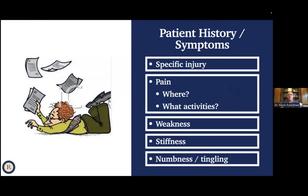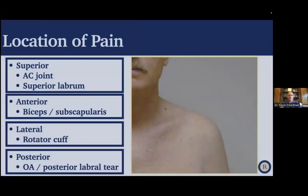When I'm seeing somebody, I'm thinking about the history of their symptoms. Did they have a specific injury? Certain problems have very specific causes. Where is their pain? What activities make it better or worse? Do they have associated weakness? Do they have stiffness? And do they have numbness or tingling — which typically isn't from a shoulder problem itself, but from the nerves coming from the neck or somewhere else around the shoulder.